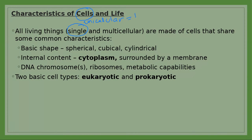Examples of unicellular organisms include all bacteria, as well as protozoa and algae. The second type of organism is the multicellular organism — one that has many cells in its body. Humans, for example, are multicellular organisms, having trillions of cells.